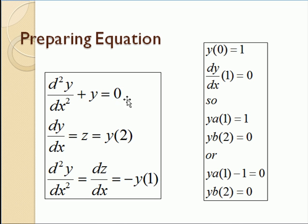Again we have to break this equation up into two first order equations. We let dy dx be z. Or dy dx is y of two. And then dz dx is the second derivative which now is just minus y of one. Our boundary conditions are here. y of zero is one. y prime of one is zero. So that's equivalent to ya of one minus one should be zero. And yb of two now should be zero because we're doing the first derivative at x equals one.